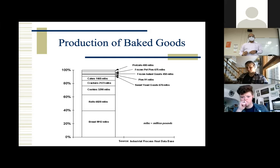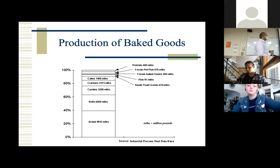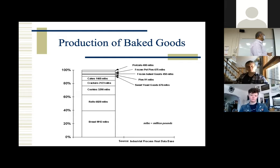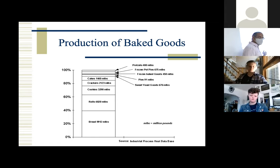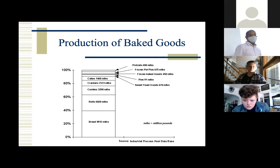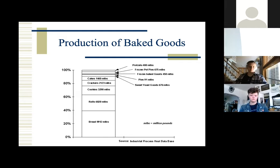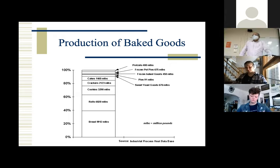Looking at baked goods in the industrial market: bread is almost 40%, then bread rolls. The next category would be cookies and crackers, then cakes, and miscellaneous items. Bread makes a major portion of baked goods in the marketplace.